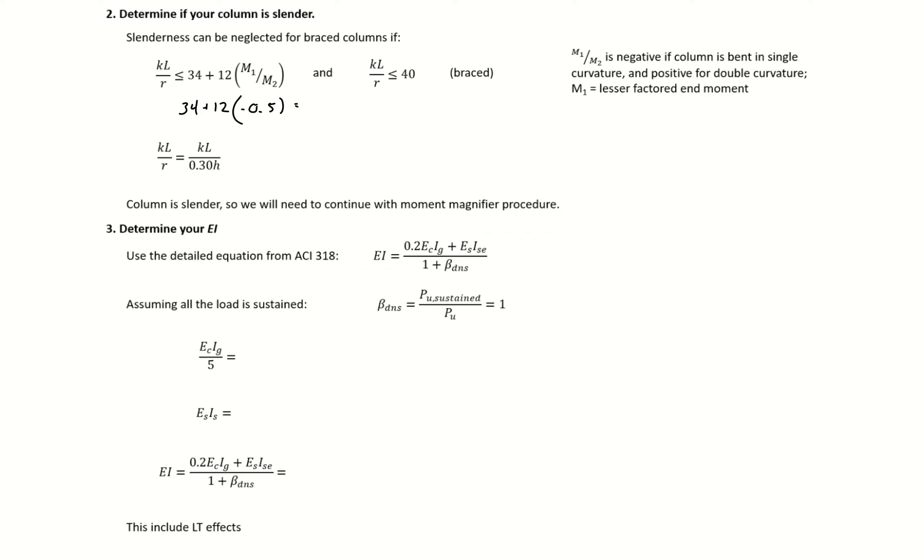This gives us a limit of 28, and this 28 is less than our 40, so our lower value controls. Our 28 controls.